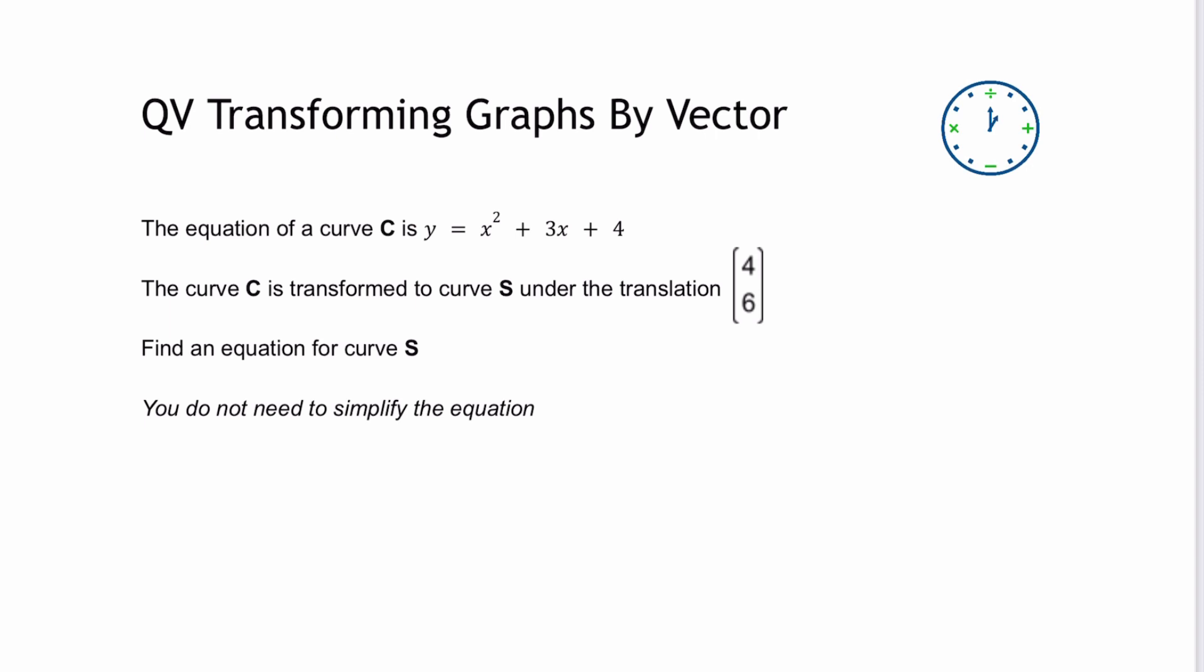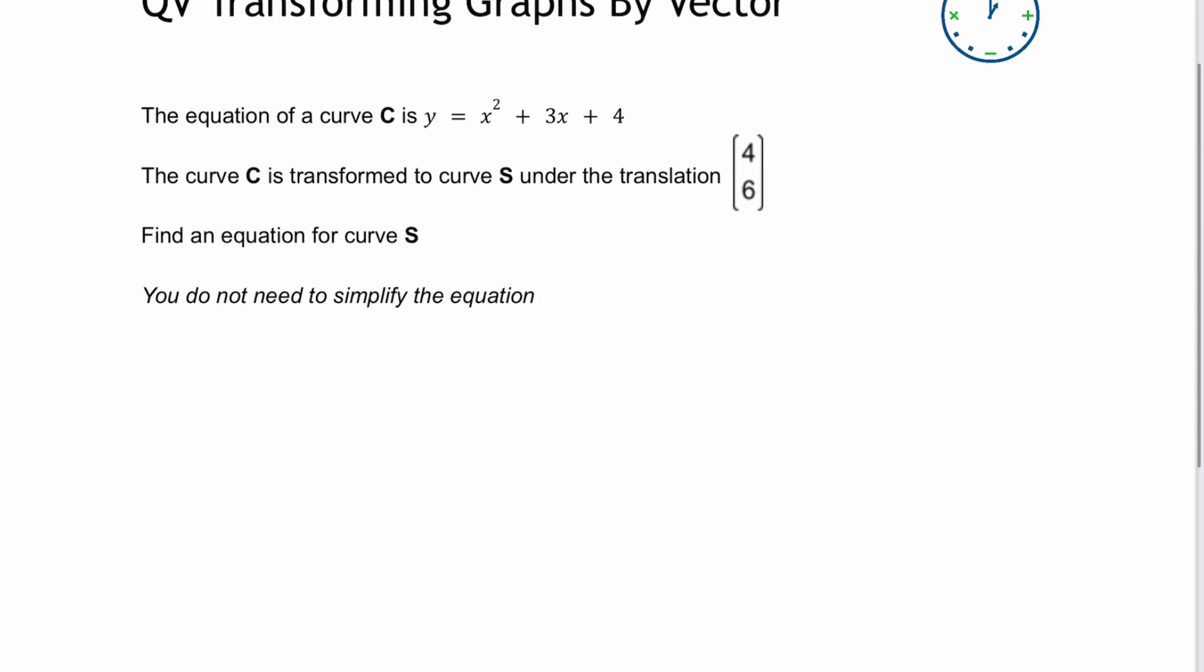We're being asked to transform it to curve S under the translation vector 4, 6 which is basically 4 is going to be in the x direction. Now just be a little bit careful about that because while it's in the positive x direction it means then that the function is going to be changed by negative 4.